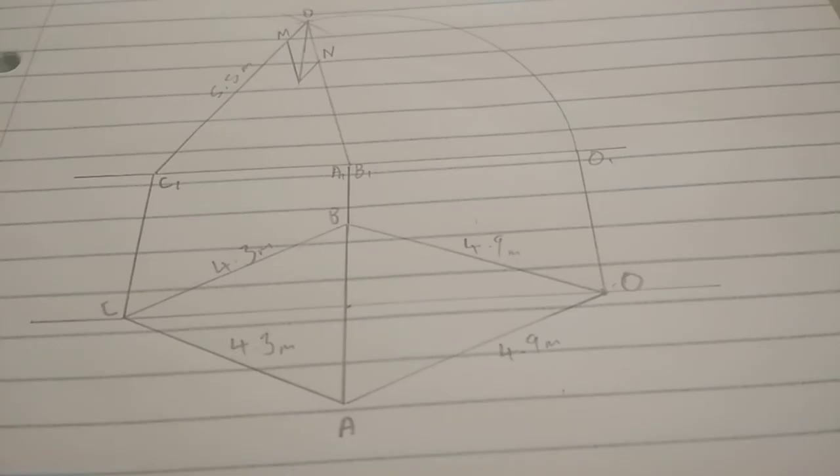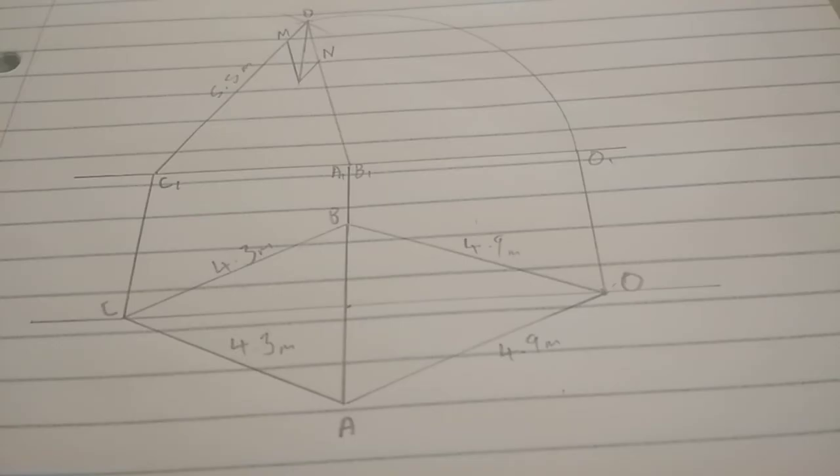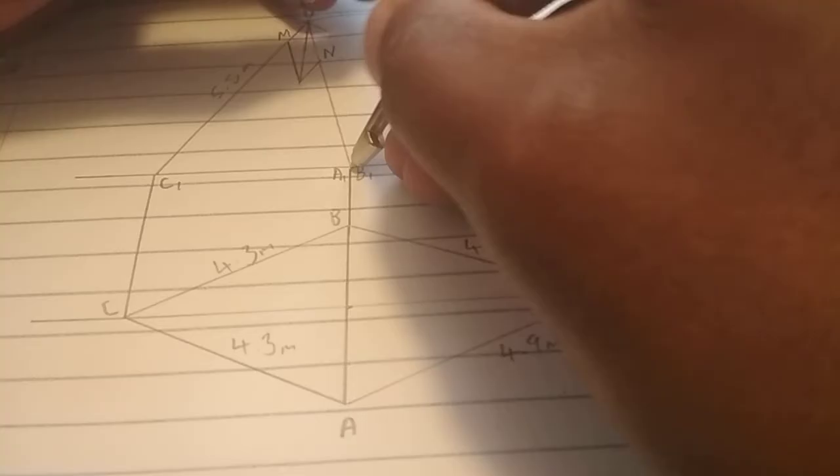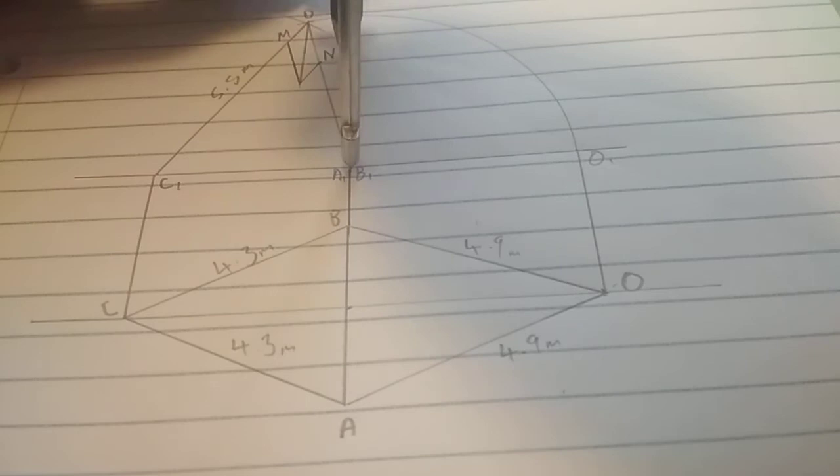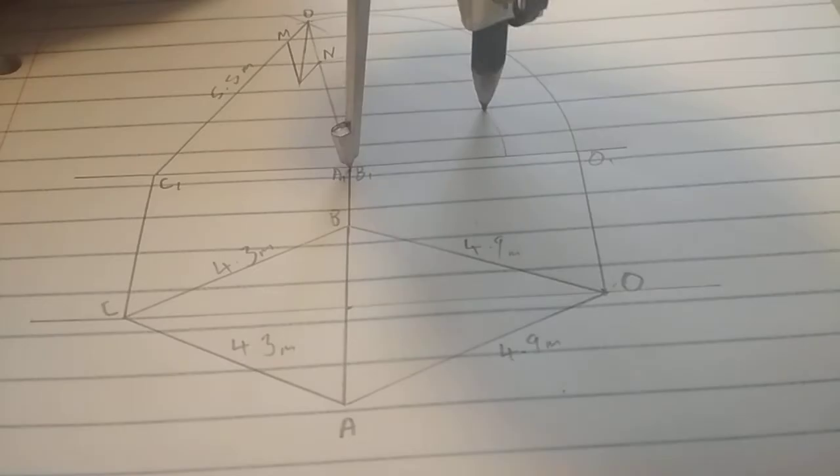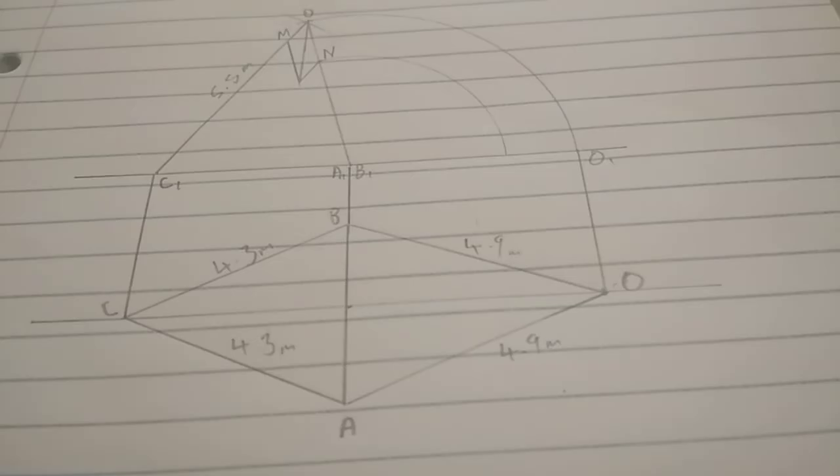We're going to need our compass once again. We'll put it back on A1, B1 and then put it on N. We'll draw our arc. Just like that.